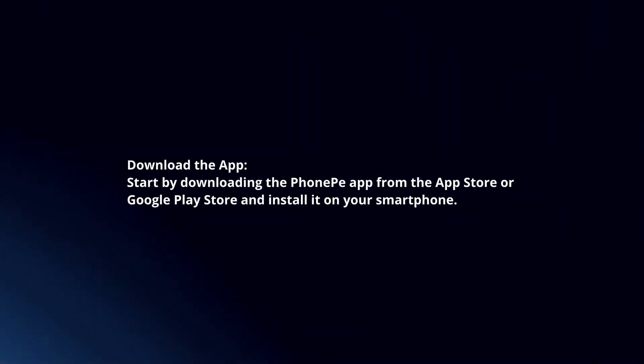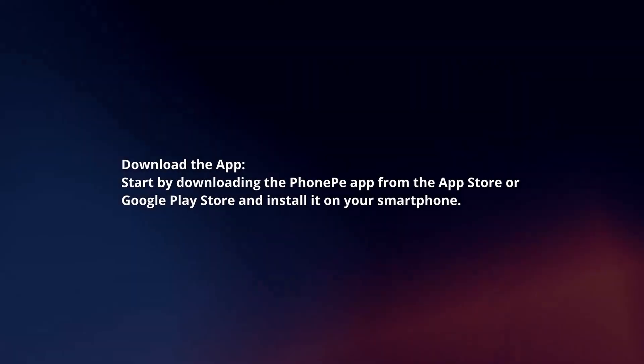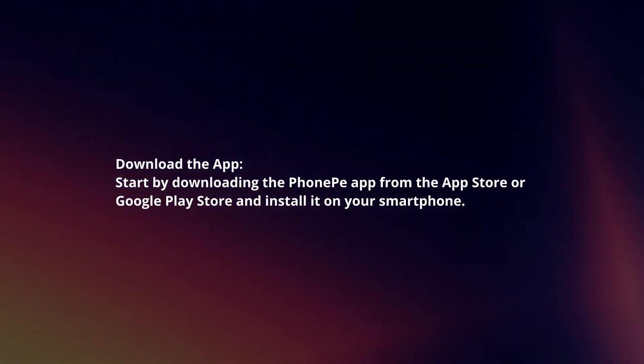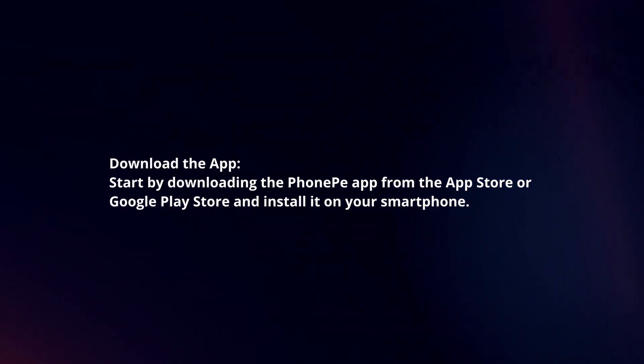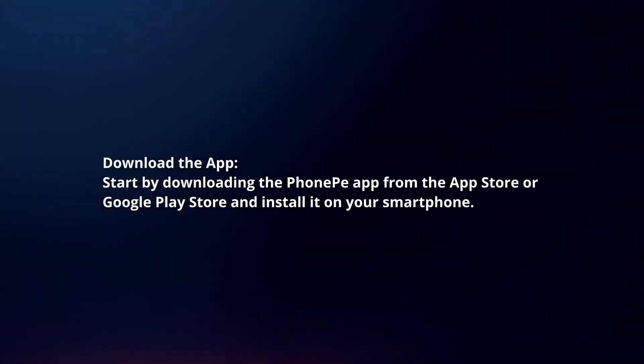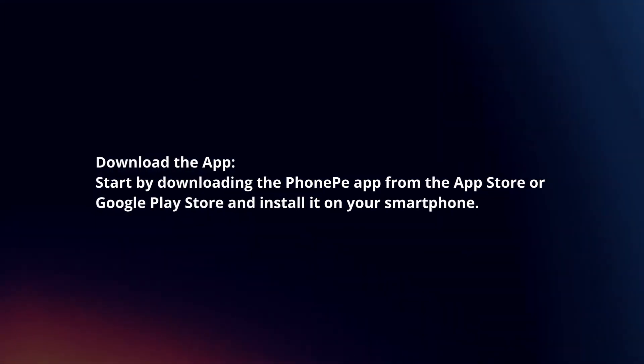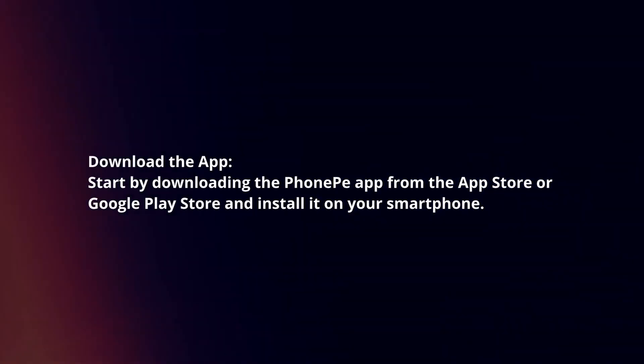Download the app. Start by downloading the PhonePe app from the App Store or Google Play Store and install it on your smartphone.